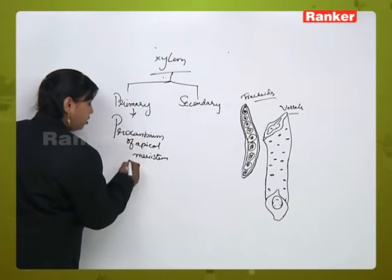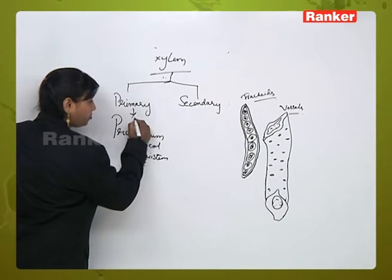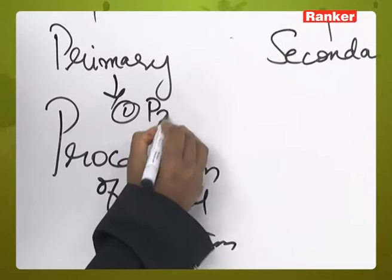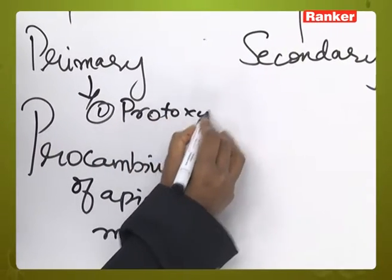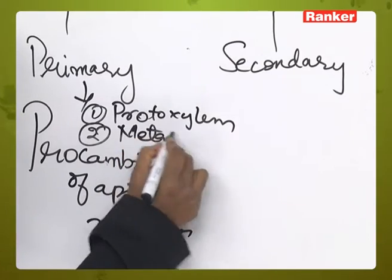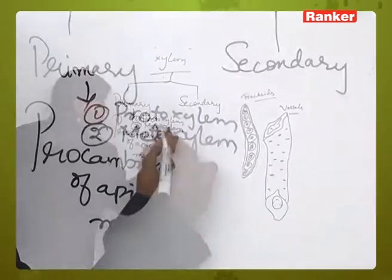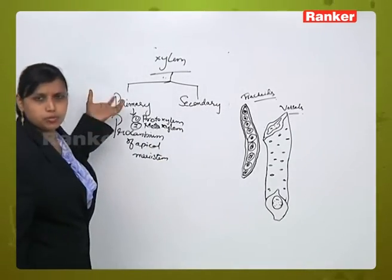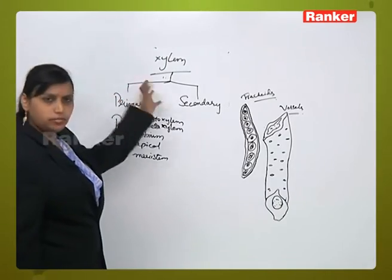This primary xylem is again of two types. First one is proto xylem. Second one is meta xylem. We will talk later what is proto xylem and what is meta xylem at the end.